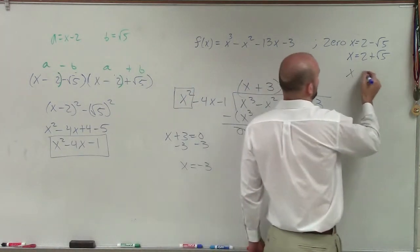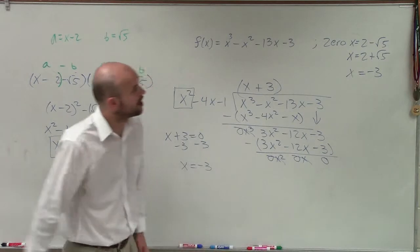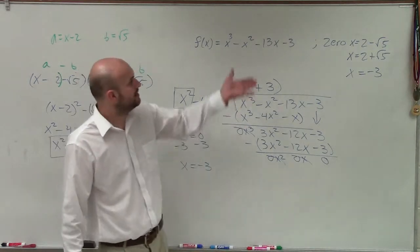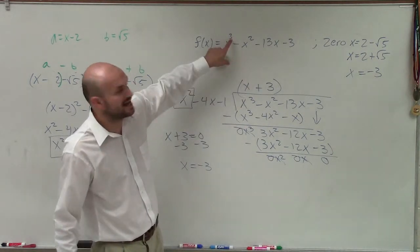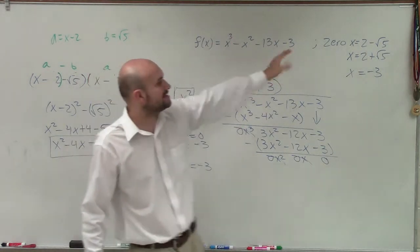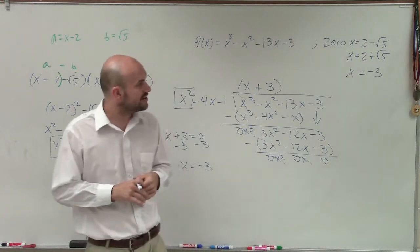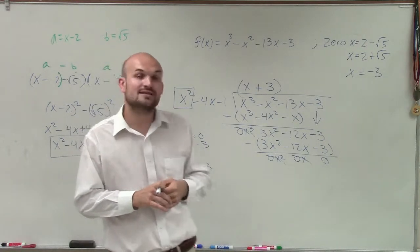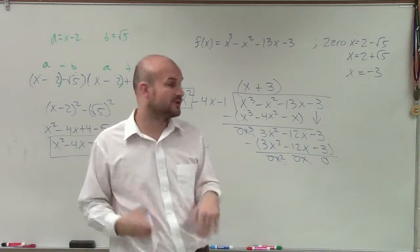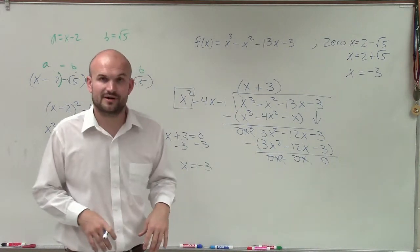So therefore, the total number of zeros in this problem is 3 — which you can also confirm from the degree of the polynomial. The zeros are x = 2 - √5, x = 2 + √5, and x = -3.